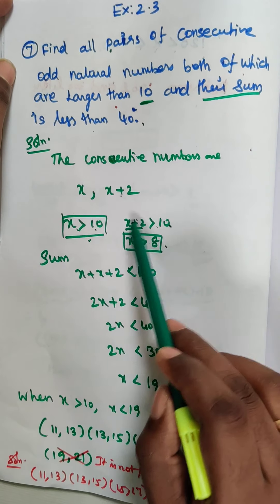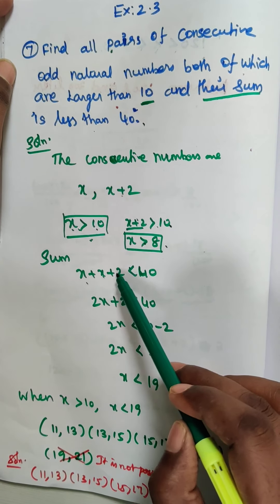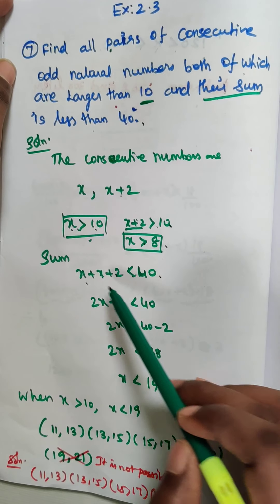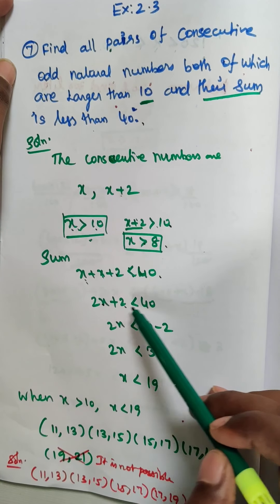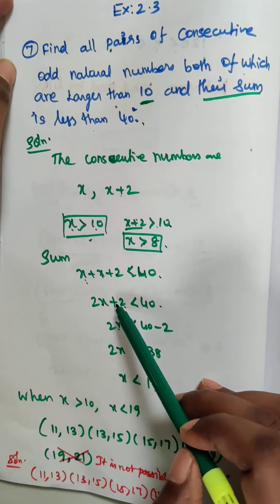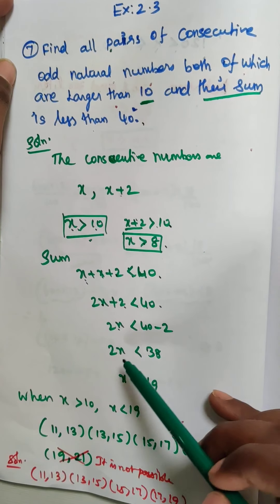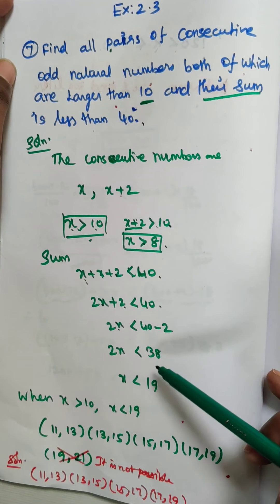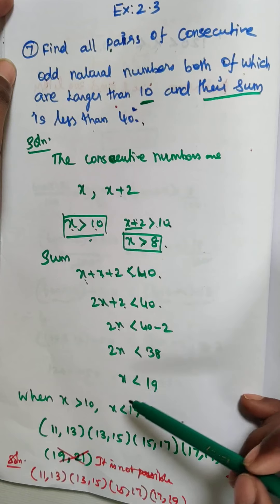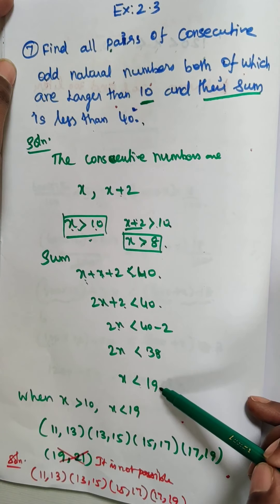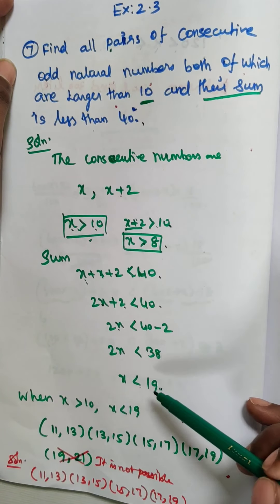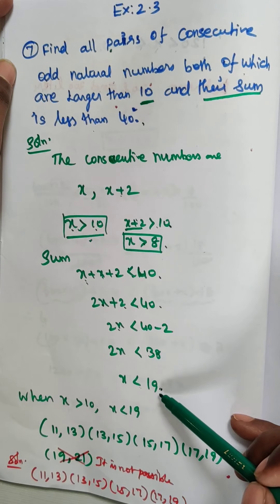Now their sum is less than 40, so x plus (x plus 2) is less than 40. That gives us 2x plus 2 less than 40, so 2x is less than 38, which means x is less than 19.